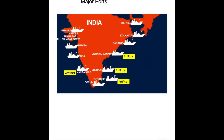India has a long coastline, forming the biggest peninsula in the world. It has 12 major ports and 187 notified minor and intermediate ports. Oceanic waterways handle 95% of India's foreign trade by volume and 70% by value, and are also used for transportation between the islands and the rest of the country.